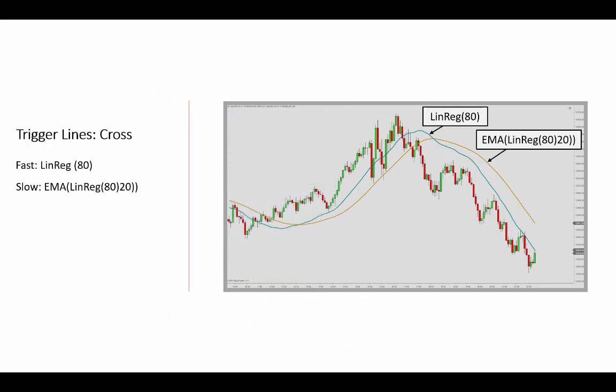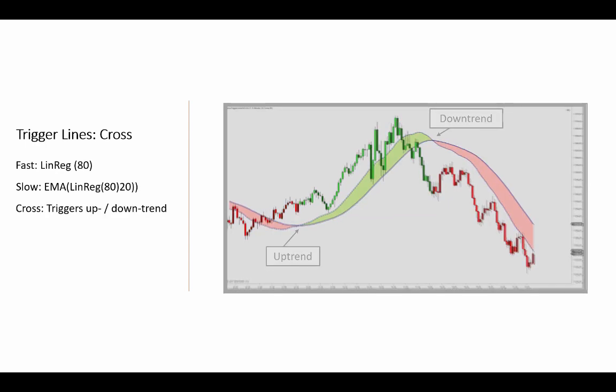Our indicator library version comes with additional features: color plots, paint bars, as well as data series for use in strategy scripts and other third-party applications such as Bloodhound and Blackbird from Shark Indicators.